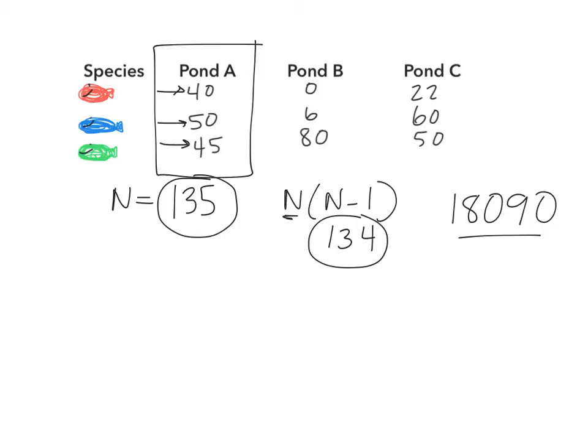And just like on the top, on the bottom we want to take that little n value times the little n minus 1. So 40 is our little n value times n minus 1 would be times 39. 50 is the little n value. 50 minus 1 is 49. 45 is our n value. 45 minus 1 is 44. And then you actually need to multiply those out. So 40 times 39 is 1560. 50 times 49 is 2450. 45 times 44 is 1980.